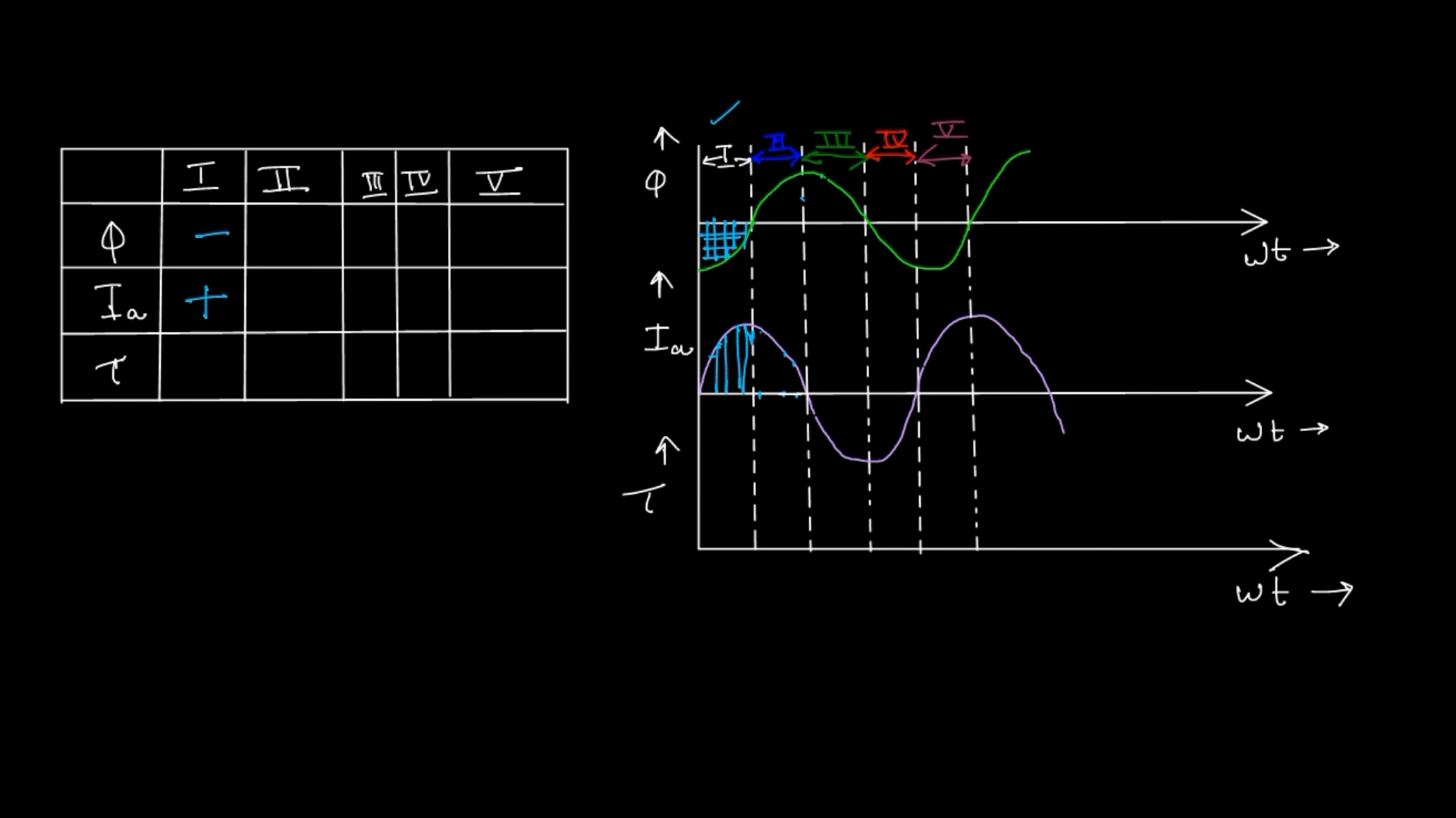For part number two, flux is positive and armature current is positive, so your resultant torque is positive. For segment three, flux is positive and your armature current is negative, so positive into negative, again negative. Similarly for segment four and five, there will be an alternating positive and negative torque.